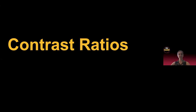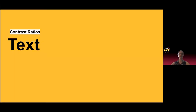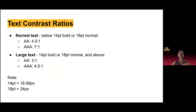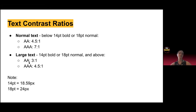So first off, contrast ratios. A lot of you have probably worked a little bit with contrast ratios or are familiar with this. Starting with text — normal text is anything below 14-point bold or 18-point normal. 14 points is actually a little bit bigger than 18 pixels, and 18 points is a little bit bigger than 24 pixels. The standard for AA is 4.5 to 1, and that's what ASU is supposed to comply with. And then for large text, we have a 3 to 1 ratio.